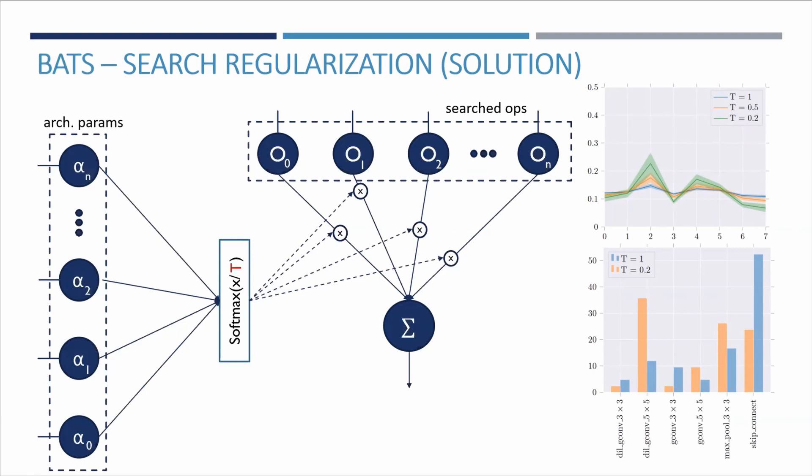Hence, during search, the network cannot equally rely on all possible operations by pulling information from all of them, as it would in the case of T equals one. Instead, in order to ensure convergence to a satisfactory solution, it has to assign the highest probability to a non-zero operation, enforced by the sub-unity temperature.